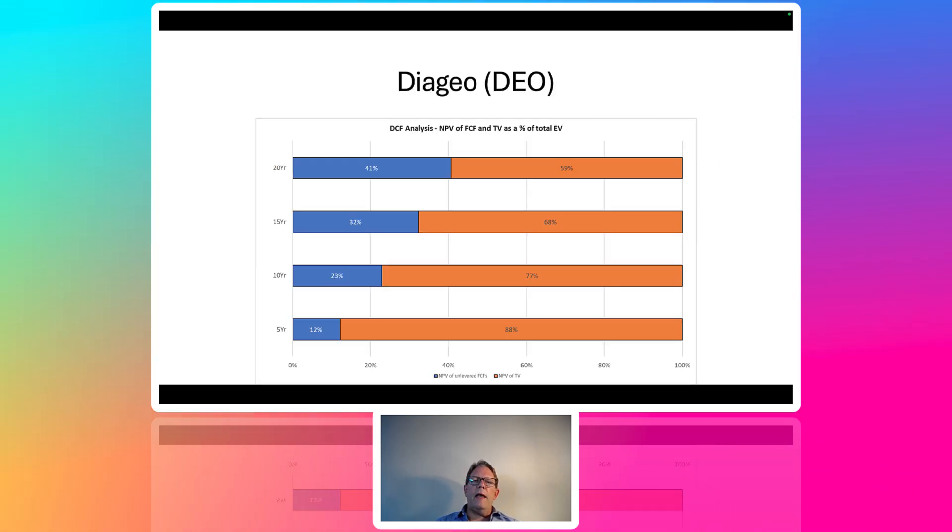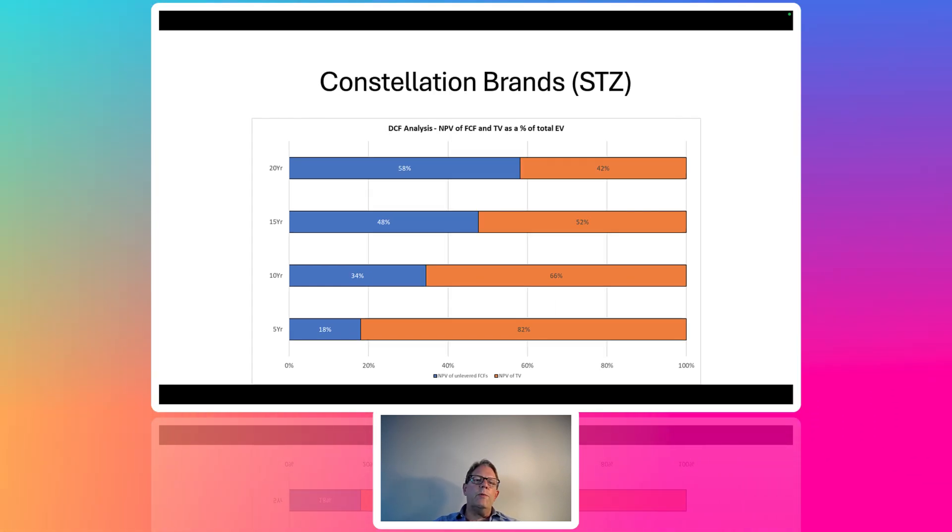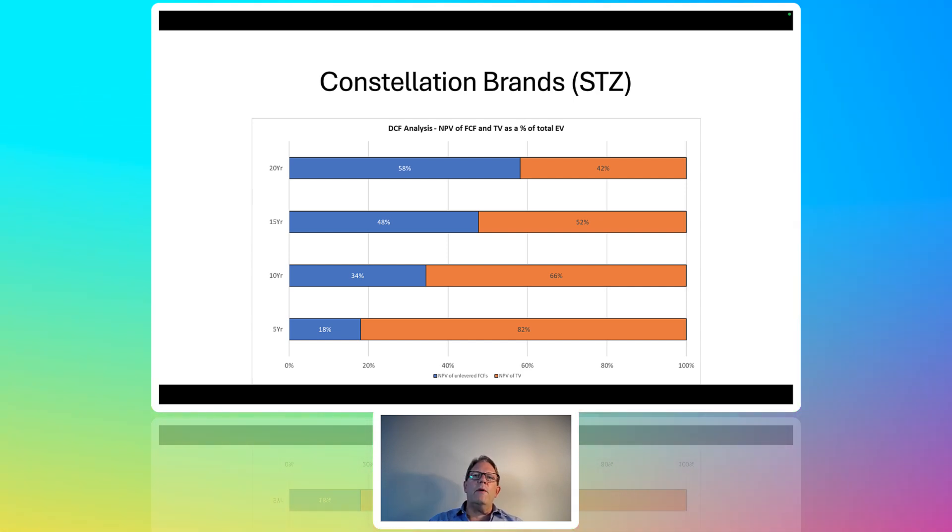I had a student who did a summer project, and I asked him to go calculate the explicit forecast period as a percent of the valuation. So the blue is the explicit. The orange is the terminal value. When he was the five-year explicit, he got, this is for Diageo, he got 88% of the terminal value. And when he went to 20 years, he still had 59% of the value in the terminal value. I thought that was fascinating. Brown Forman, even worse. After a 20-year forecast, he still had 69% of the value beyond the forecast period. Pretty amazing. And then Constellation Brands, 42%. So you just see that even pushing the forecast period out, you may not capture full value. Stocks look long-term. A theme I'm going to come back to more than once, I promise.